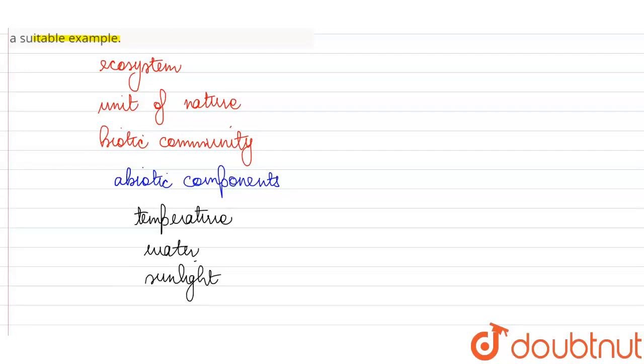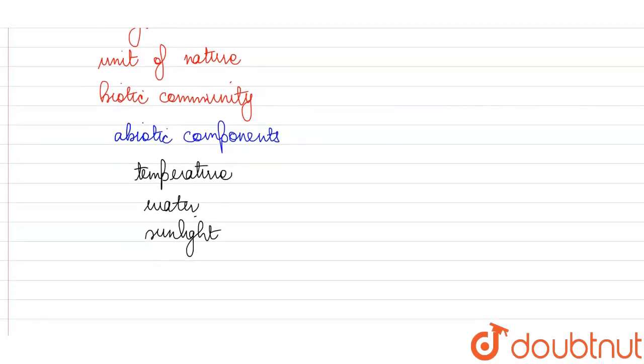Then we have sunlight, which is somewhat related to the temperature because if there is more sunlight, the temperature is also going to be higher. And then we have soil.